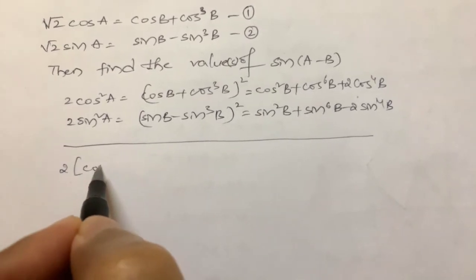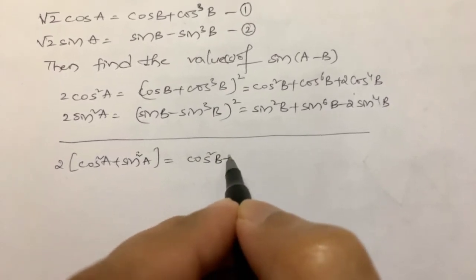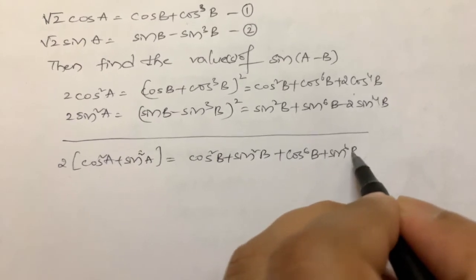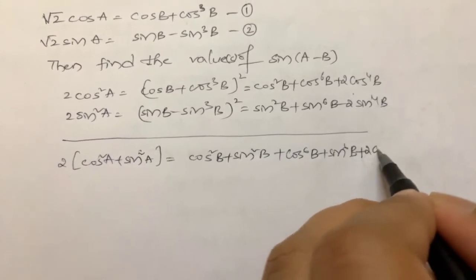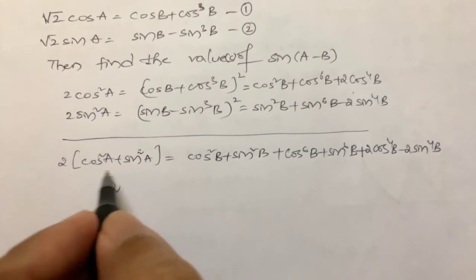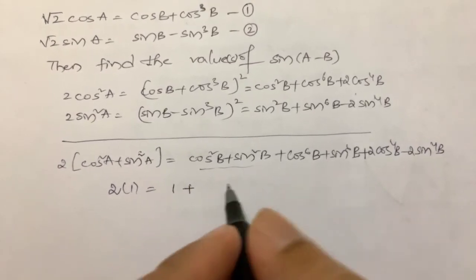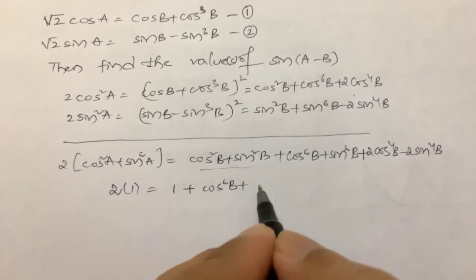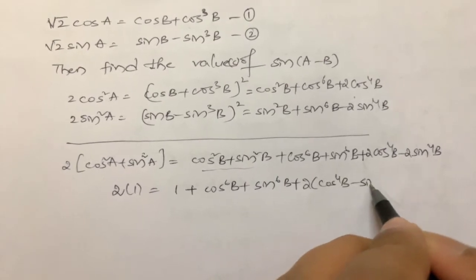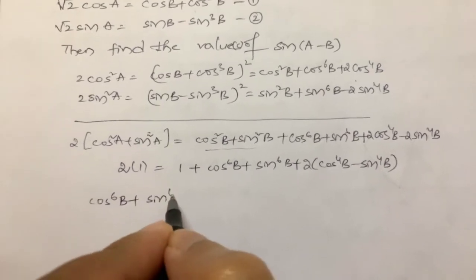Adding both squared equations: 2(cos² A + sin² A) = cos² B + sin² B + cos⁶ B + sin⁶ B + 2 cos⁴ B - 2 sin⁴ B. Now I want to simplify the terms. I will take cos⁶ B + sin⁶ B separately.